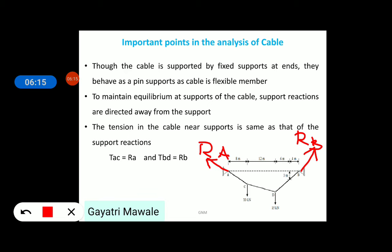The tension in cable near supports is same as that of the support reaction. It means, tension in AC part of the cable will be equal to RA in magnitude but opposite in direction. And tension in BD part of the cable shown here will be equal to reaction at B point equal in magnitude but opposite in direction.